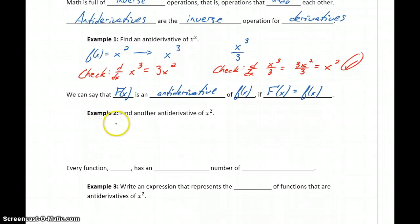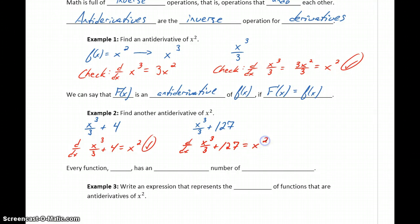In example 2, we want to find another antiderivative of x squared. We could consider x cubed over 3 plus 4. To check that, we can take the derivative of this function. The derivative of x cubed over 3 will give us x squared, and the derivative of 4 is 0. So we found another antiderivative of x squared. But we could repeat that by tacking on any constant we want, like add 127. Checking that would still get us to a derivative of x squared, because regardless of what that constant is, the derivative of a constant is always 0.